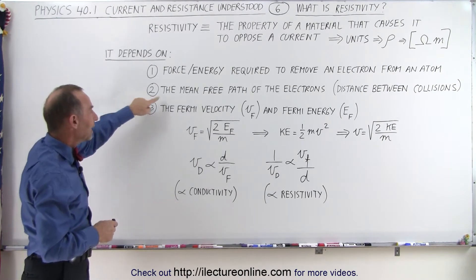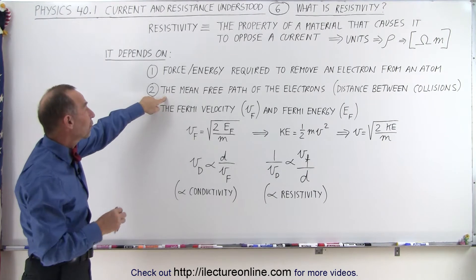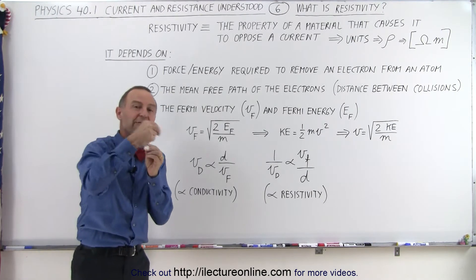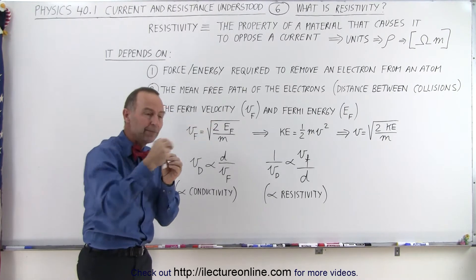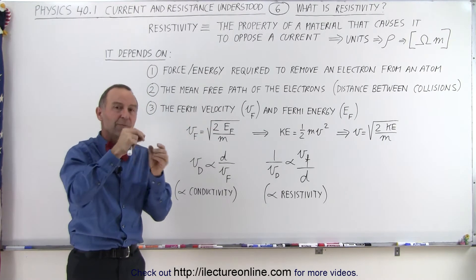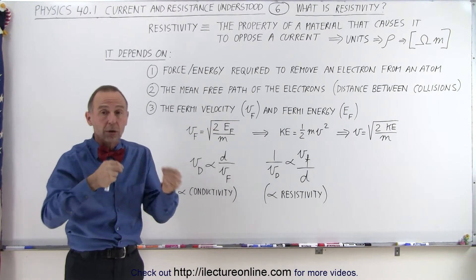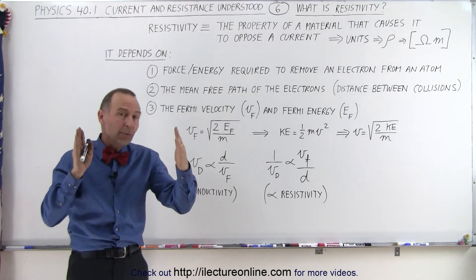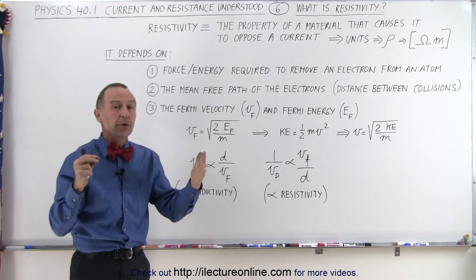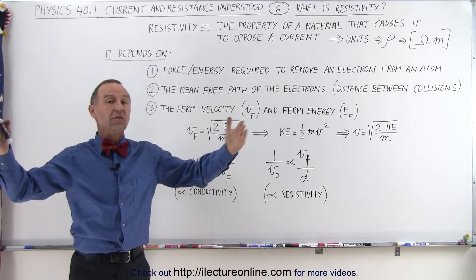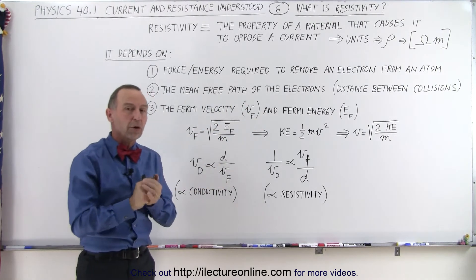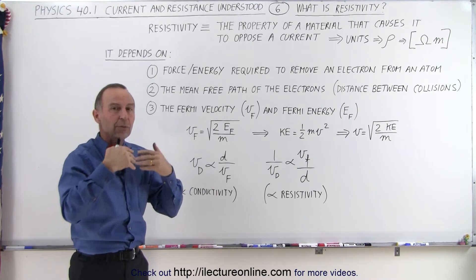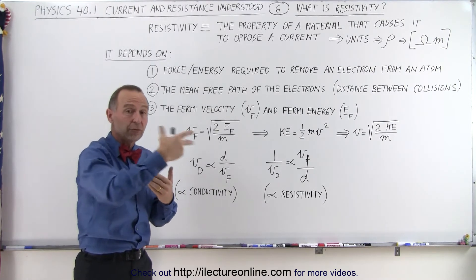Secondly, and this is one of the main reasons, it's called the mean free path of the electrons. Once the electrons are ripped free from the atom, they can move from atom to atom. Well, they'll move a certain distance before they collide with another electron or with an atom or a set of electrons there. And so the distance between those collisions is very important. The greater the distance, the more freely the electrons will flow. The smaller the distance, the more often they will bump into something, the more difficult it is for electrons to flow through the circuit.